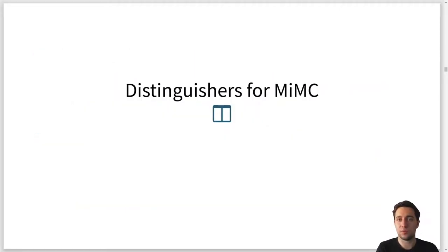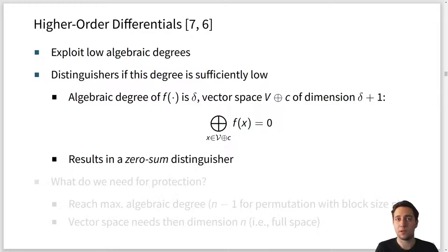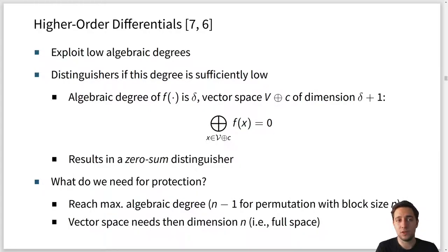This brings me to our distinguishers for MiMC. We use something called higher order differentials, which exploits the lower algebraic degree of a construction. If the degree is sufficiently low, we can build a distinguisher. If we have a function with algebraic degree delta, then we can use a vector space of dimension delta plus 1 and obtain a zero-sum distinguisher — if we sum over the results of each evaluation, the total result will be zero. For protection, we need to reach the maximum algebraic degree n minus 1 for an n-bit permutation, in which case the vector space would need the full dimension n, and the attack would not work.